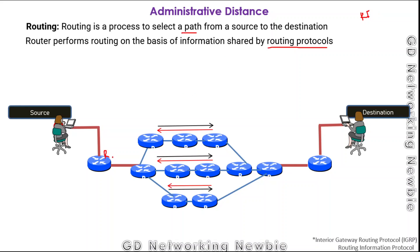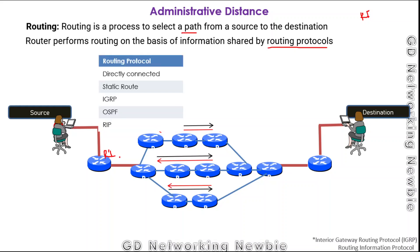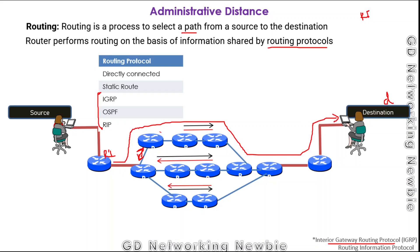Let's focus on router R1. This router R1 has been configured with multiple routing protocols like IGRP, OSPF, and RIP. IGRP stands for Interior Gateway Routing Protocol, RIP stands for Routing Information Protocol, and OSPF stands for Open Shortest Path First. These protocols exchange information about possible paths to different destinations. Let's suppose IGRP has informed this router that a certain path will be the best path to reach the destination.